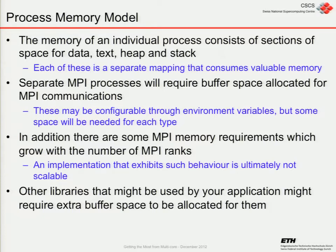We've got the process memory model with the text, the heap, the stack, and so on. Because processes are separate, having multiple MPI processes on a node means you've got to have separate buffers that MPI wants to use — buffers for incoming and outgoing data traffic, and possibly buffers for IO traffic as well. This can start to consume quite a lot of memory. Some of this may be configurable, but there's still likely to be some space needed. If we only have one MPI process and many threads, we only have one copy of the buffer to worry about.